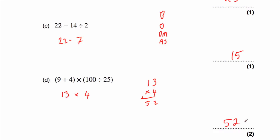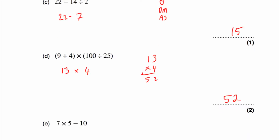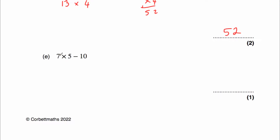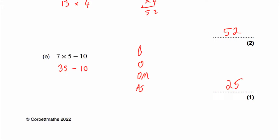Question 14e: 7 multiplied by 5 take away 10. No brackets, no orders; we have a multiplication: 7 times 5 is 35. Then 35 take away 10 is 25.